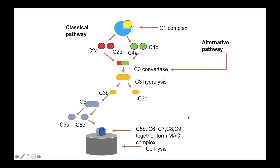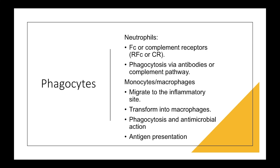Now let's go to the next slide and learn about phagocytes. Phagocytosis is the phenomenon where a target cell or pathogen is engulfed by cells, which are termed as phagocytes. The Fc receptors or complement receptors present in neutrophils generally help in activation of complement-mediated phagocytosis. Neutrophils normally cause phagocytosis via the complement pathway. While monocytes and macrophages migrate to inflammatory sites, monocytes also have the capacity to transform into macrophages. They are mainly phagocytic and antimicrobial in action and they also help in antigen presentation.